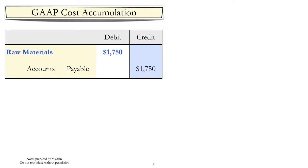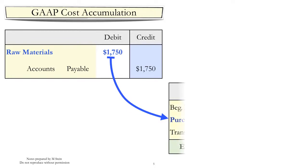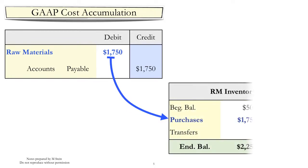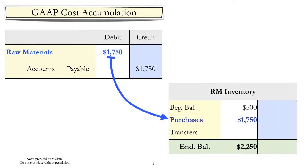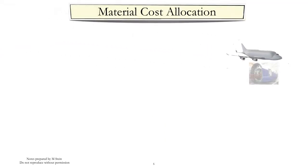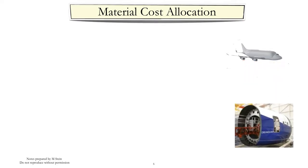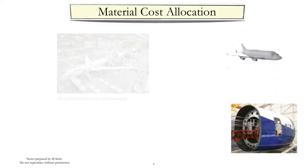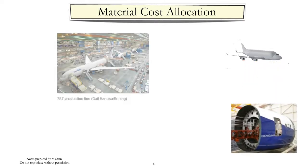This journal entry shows the recording of raw material costs and the accumulation of raw material costs in an inventory account. Note the debit to raw materials inventory. The process of recording raw materials also applies to purchased parts, such as those used in modern supply chains.